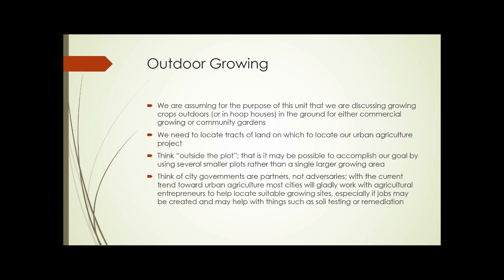Think outside the plot — it might be possible to accomplish our goal by using several smaller plots rather than a single larger growing area. Think of city governments as partners, not adversaries. With the current trend toward urban agriculture, most cities will gladly work with agricultural entrepreneurs to help locate suitable growing sites, especially if jobs may be created, and may help with things such as soil testing or remediation if required.